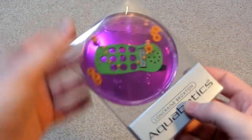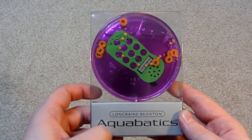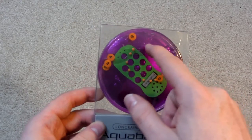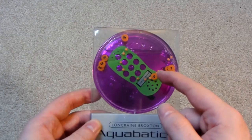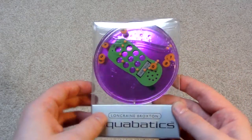Well, this is a lot smaller than I was expecting it to be. So this is a Long Crane Broxton Aquabatics puzzle, and as you can see some of the water is missing. It's really common for water to evaporate from these old water puzzles.